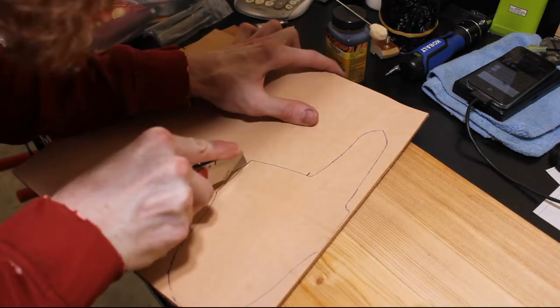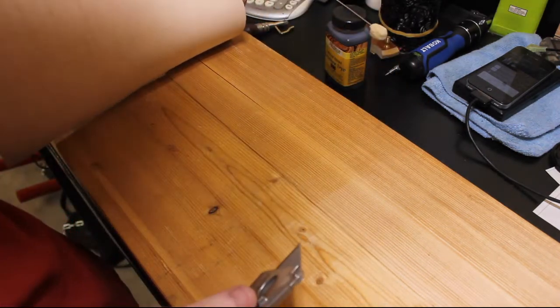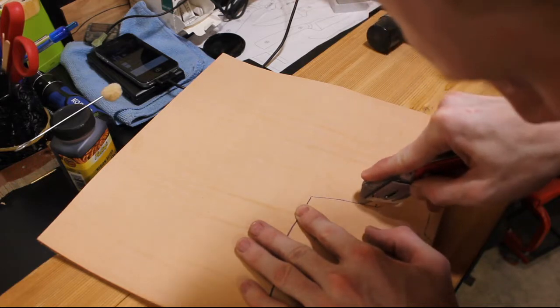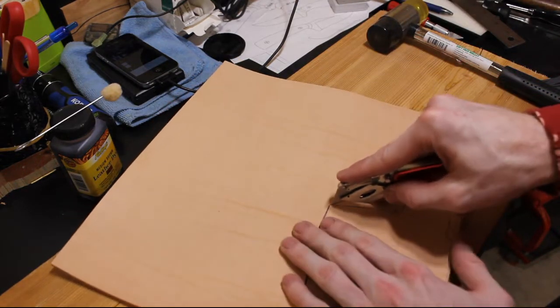After you have your template drawn out, go ahead and cut it out with a sharp knife or a razor. Take great care during this step to make straight parallel square lines. If you cut it at an angle, I found it very difficult to clean that up afterwards.